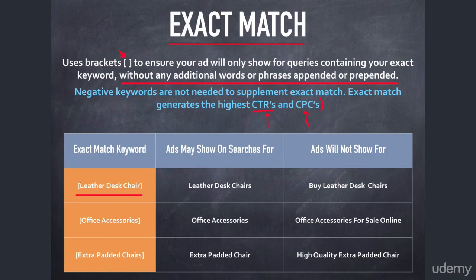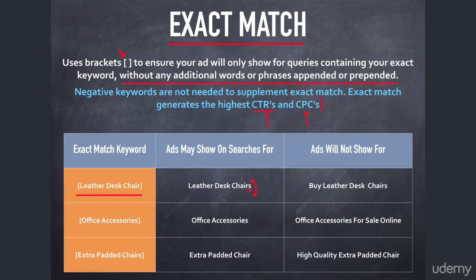Let's say "leather desk chair" is my exact match keyword — as you can see, it's contained in brackets. My ads may show for "leather desk chairs" with a plural S. That's okay — AdWords no longer allows control over slight misspellings and pluralizations, so we can show up for pluralized versions. But we won't show up for "buy leather desk chairs" because the word "buy" is prepended to my keyword and I'm out of the running.